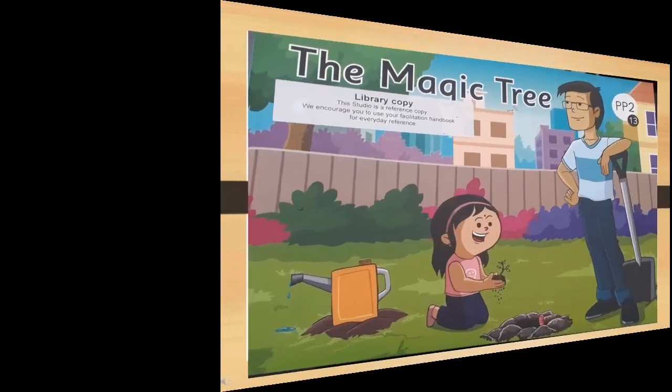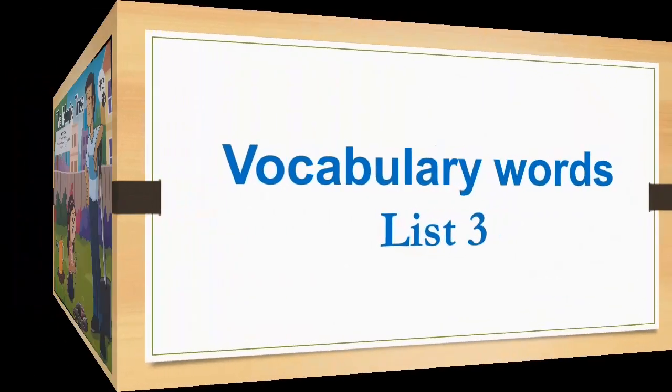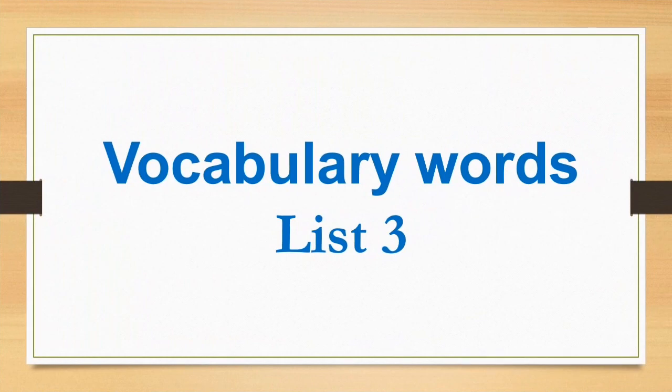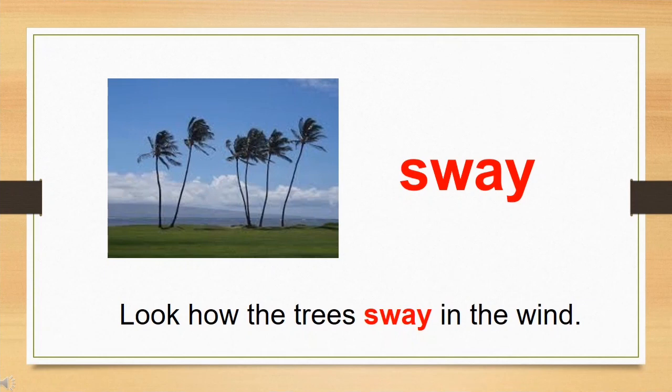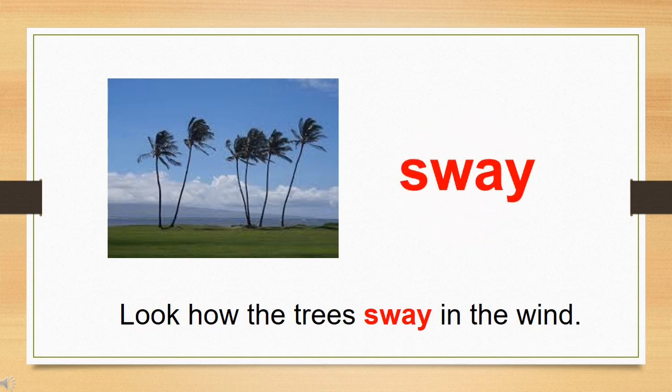Children, let's read vocabulary words list 3 from the story The Magic Tree. The first word is sway. The meaning of sway is to move slowly from side to side.